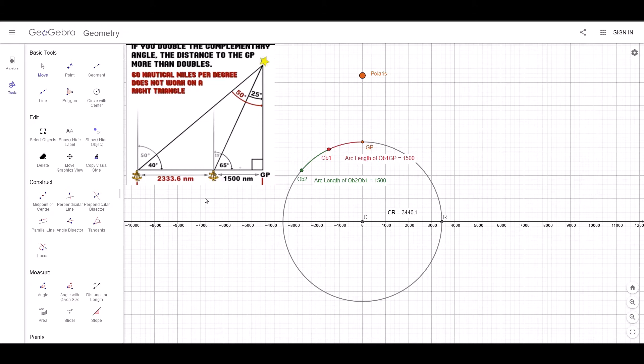In this representation, we have the globe earth, we have Polaris, we have its GP at the North Pole, and we've got a couple of observers, 1 and 2. Observer 1 is 1,500 nautical miles from the GP. Observer 2 is 1,500 nautical miles from observer 1. So the question is now, can we get observer 1's angle to equal 65, observer 2's angle to equal 40, while at the same time maintaining the 1,500 nautical miles for all three points?